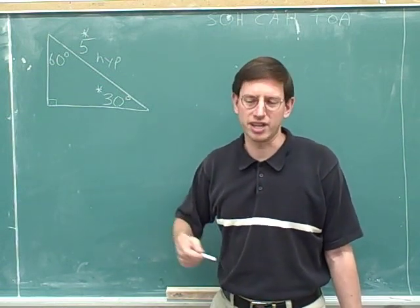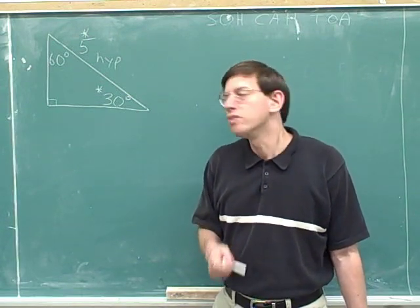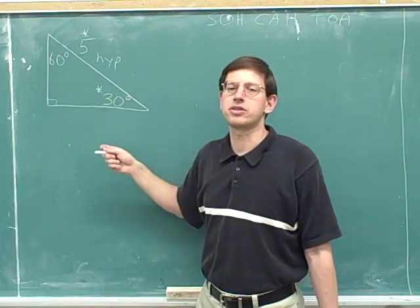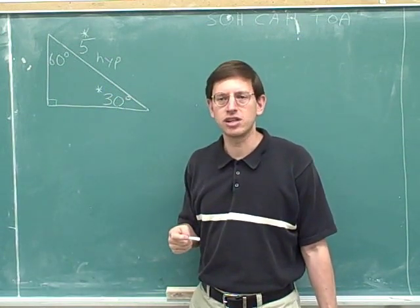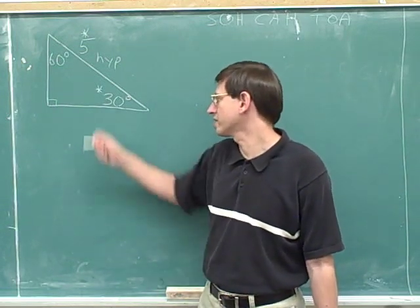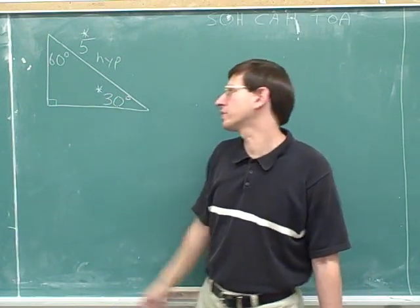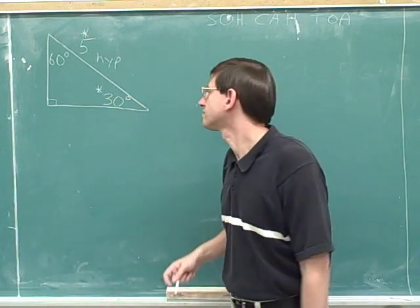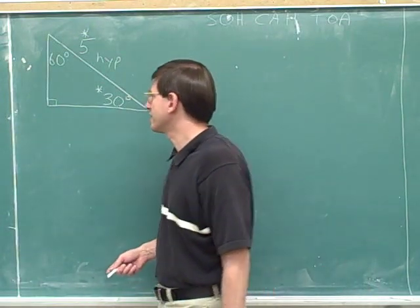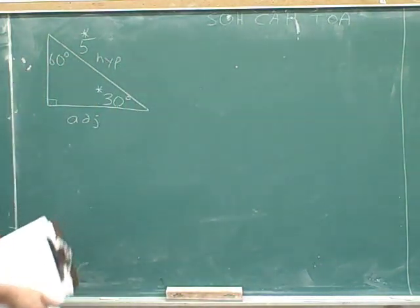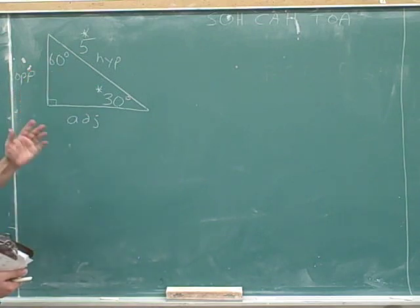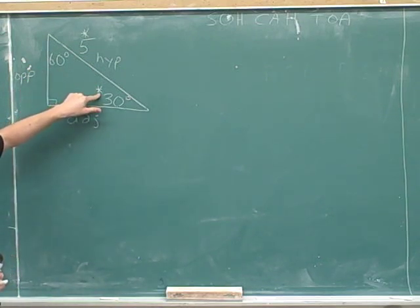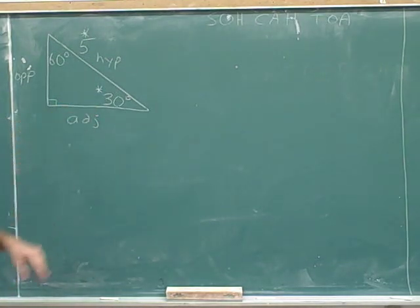In physics, the usual convention is to focus on the angle you were originally given. The 60 degrees is something we figured out; the 30 degrees is what we were given, marked with an asterisk. So we're going to keep focusing on the 30-degree angle. With that choice, the side adjacent to the 30-degree angle is labeled adjacent, and the vertical side is opposite. Using the asterisk notation helps you remember which angle you're focusing on.